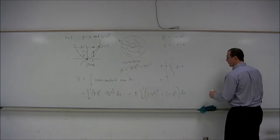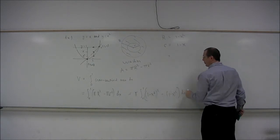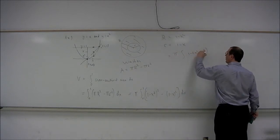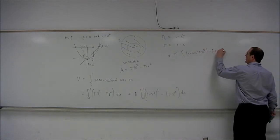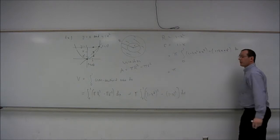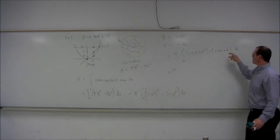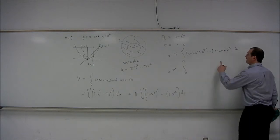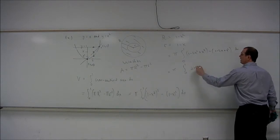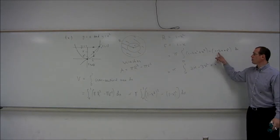Let's go ahead with the computation — algebra first. Squaring, we get 1 minus 2x squared plus x to the fourth, minus 1 minus 2x plus x squared. Integral from 0 to 1. So 1 minus 1 is 0, negative 2x squared minus x squared gives negative 3x squared. There's also a linear term 2x, then negative 3x squared, and plus x to the fourth — that's the polynomial we have to integrate.